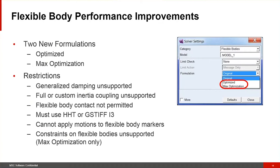These new flex body formulations come with some restrictions. Generalized damping is unsupported, polar custom inertia coupling is unsupported, and flex body contact is not permitted. You must use HHT or GSTiff for now, and you can't apply motions directly to flex body markers. For the max optimization formulation, constraints directly on flex body nodes are also unsupported. The regular optimized formulation does not have that last restriction. Despite these restrictions, there are many use cases where this can deliver a really significant performance gain.